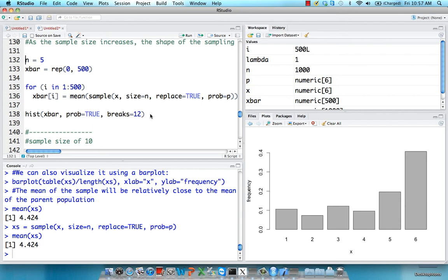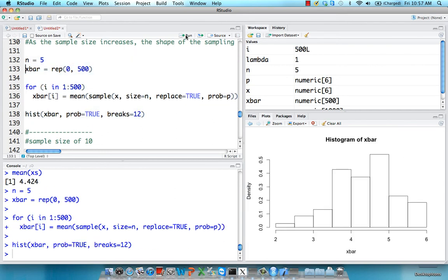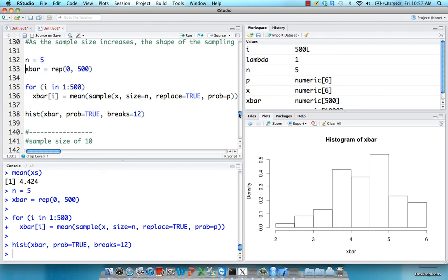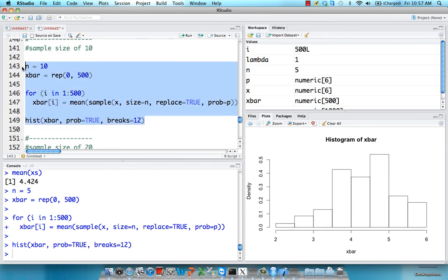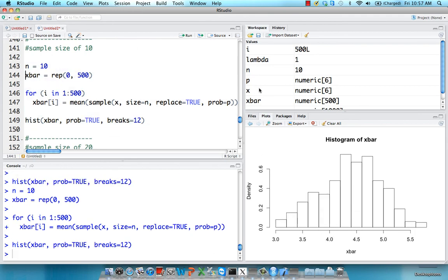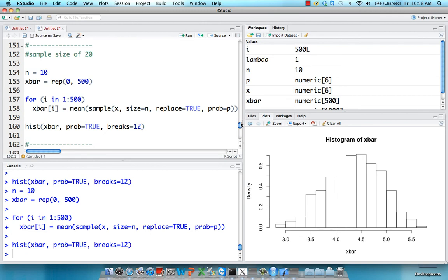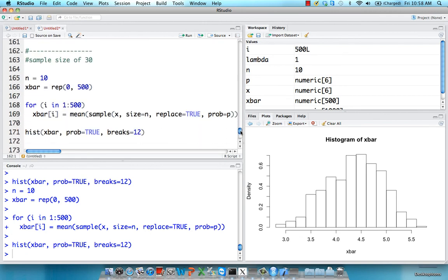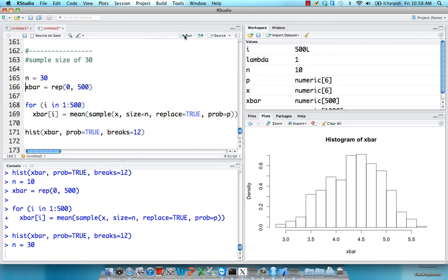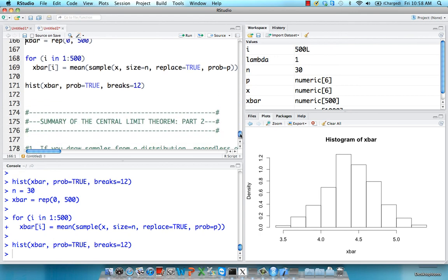But if we plot the sampling means and build a distribution out of those for a sample of size 5, you can see it's a little bit skewed to the left, similar to the parent population. But as we increase the sample size to 10 and plot those, it becomes more normal. And increase it to 20, it becomes even more normal. And finally, if we have a sample size of 30, it becomes more and more like a normal distribution.